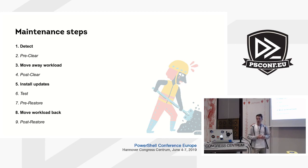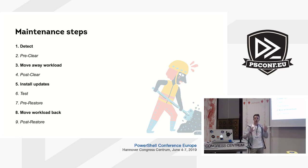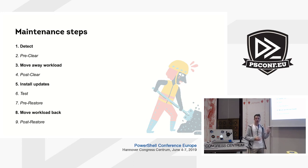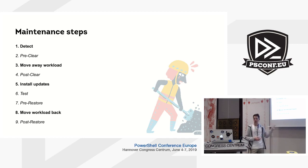Then we move away any active workload which might be on the machine we would like to update. We support several types of workloads and are working on adding new ones. Then we run a post-clear plugin if there is any. Then we install updates and reboot the machine if the update requires it. Then we run a test step script to verify the machine is ready to be put back online. We run a pre-restore step script, we move workload back if we moved it out previously, and as a final step, we run a post-restore plugin.